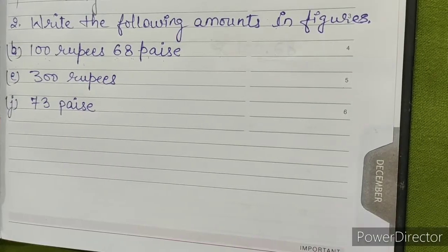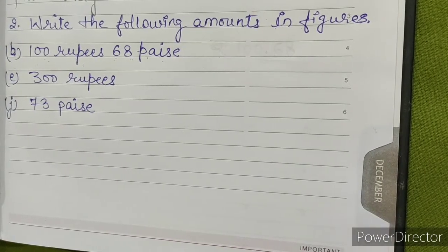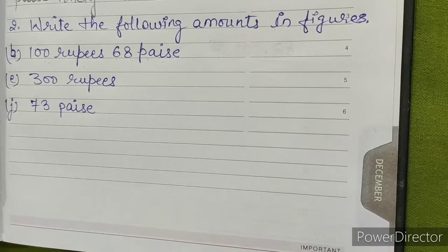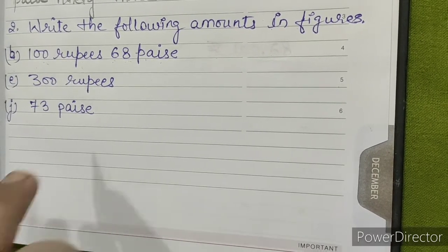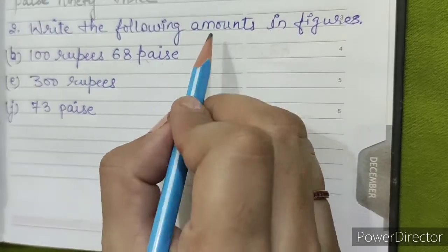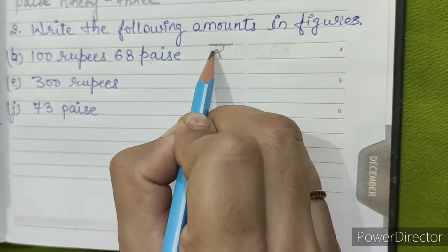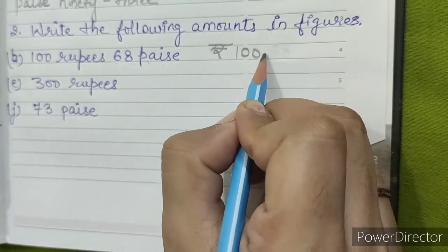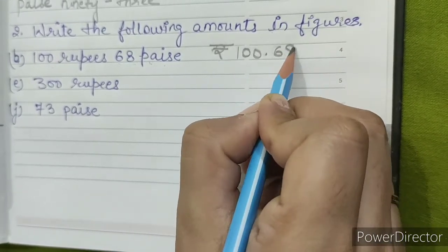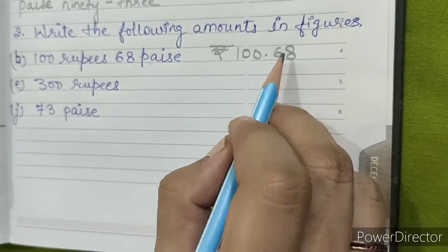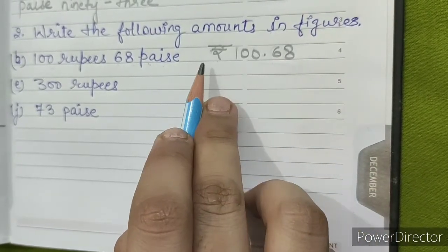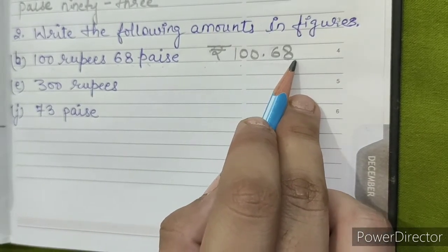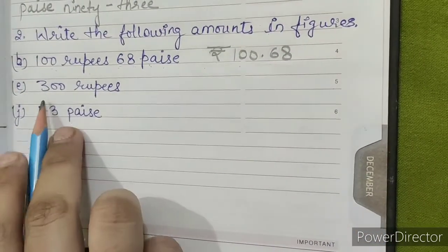Question number 2: write the following amounts in figures. B. 100 rupees, 68 paise. Now we'll write it in figures — rupees 100.68 — and we'll read it as rupees 100 and paise 68.